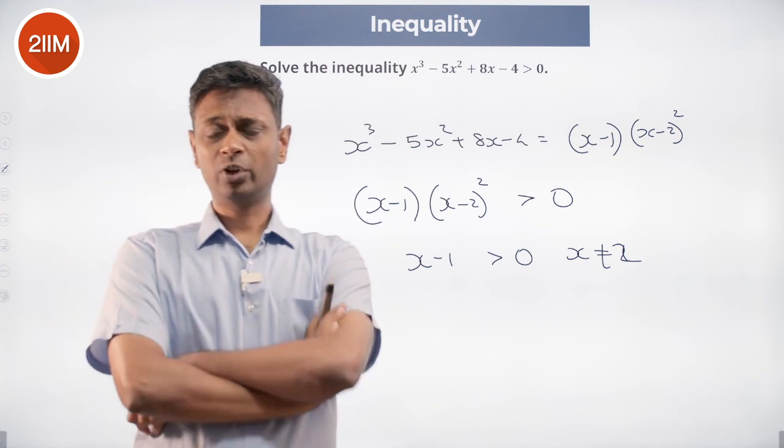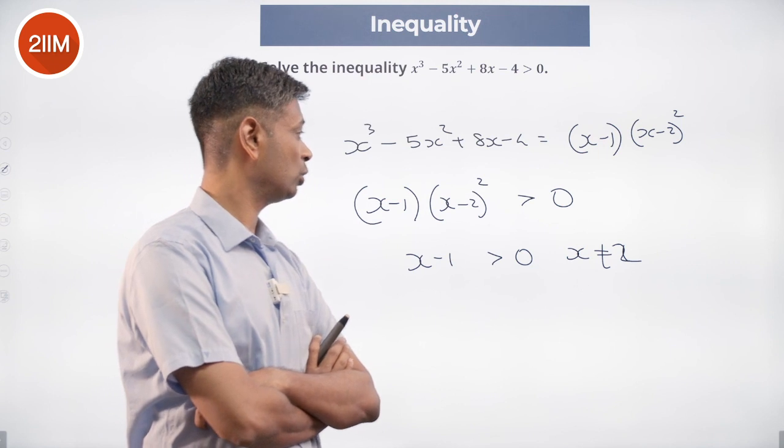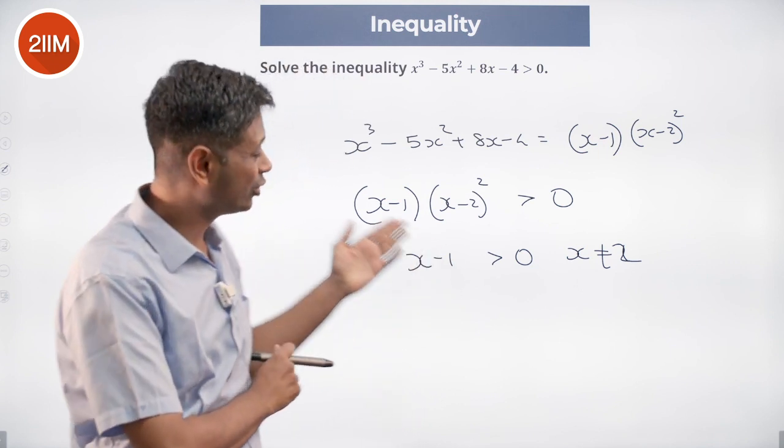(x - 2)² is greater than or equal to 0. When x ≠ 2, this is positive. x - 1 times a positive number > 0 means x - 1 should be positive.